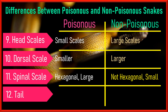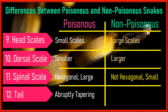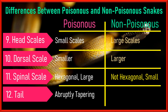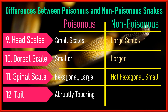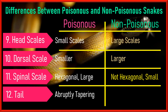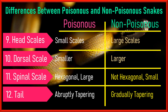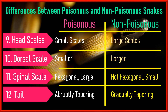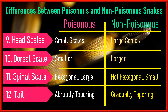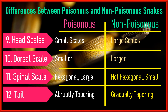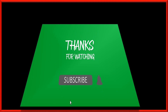Regarding tails: the tails of venomous snakes taper quickly and abruptly toward the end, while non-venomous snakes have long, gradually tapering tails. That's all about venomous and non-venomous snakes — hope you found it useful. Please press the like button and subscribe for more upcoming content.